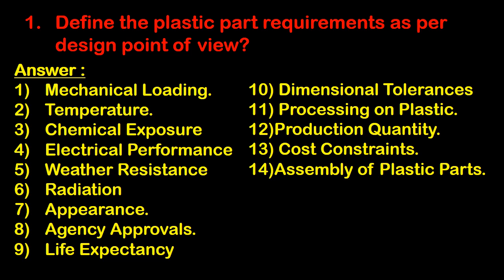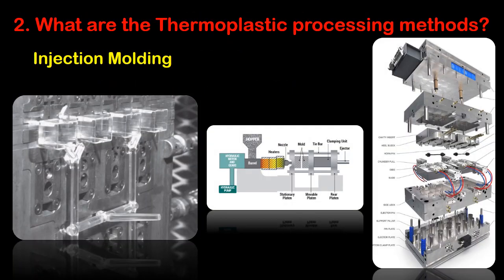Eighth is agency approvals, ninth is life expectancy, tenth is dimensional tolerance, eleventh is processing of plastics, twelfth is production quantity, thirteenth is cost constraints, and fourteenth is assembly of plastic parts. Question number two: what are the thermoplastic processing methods?